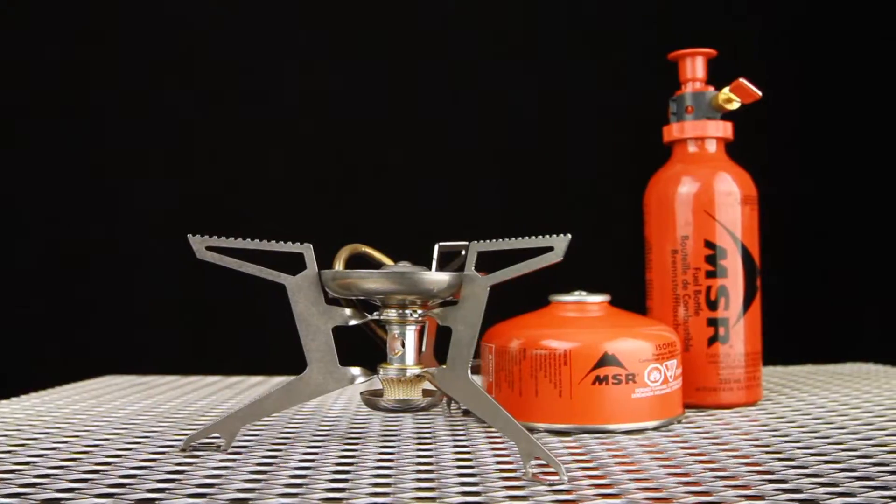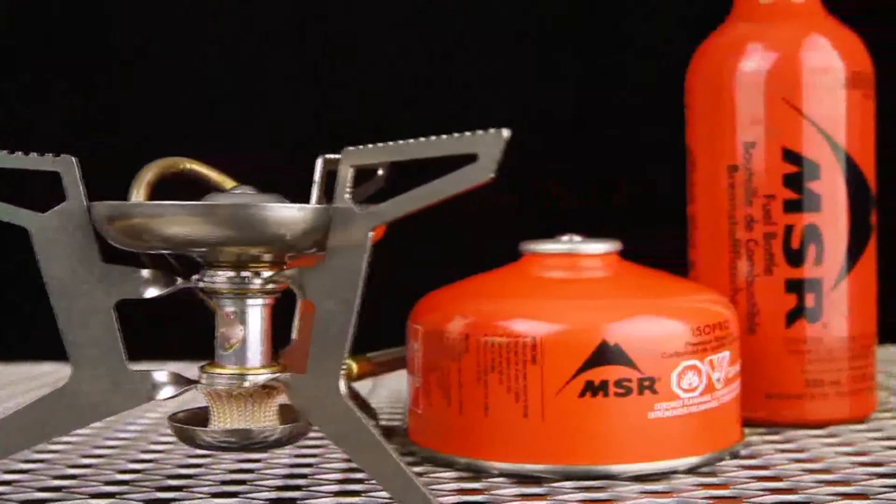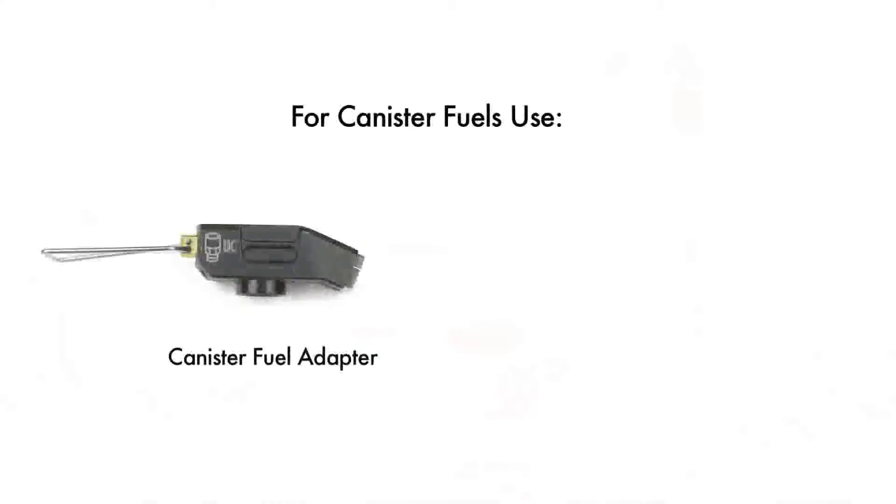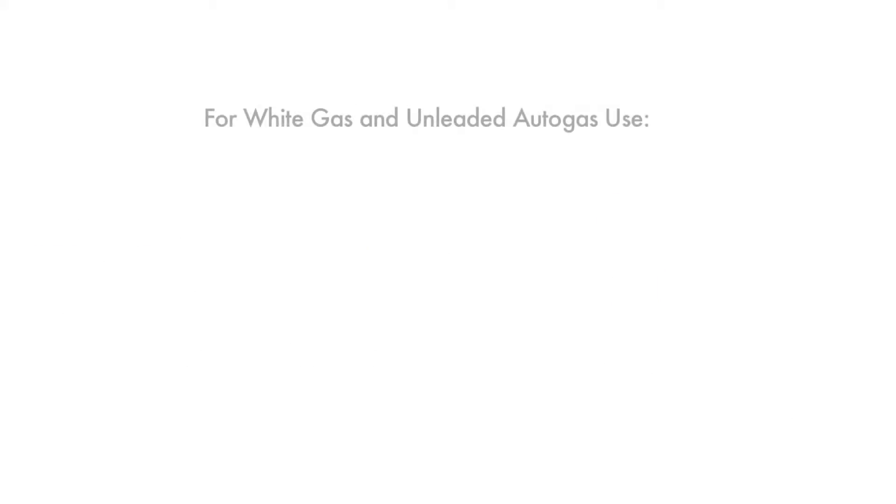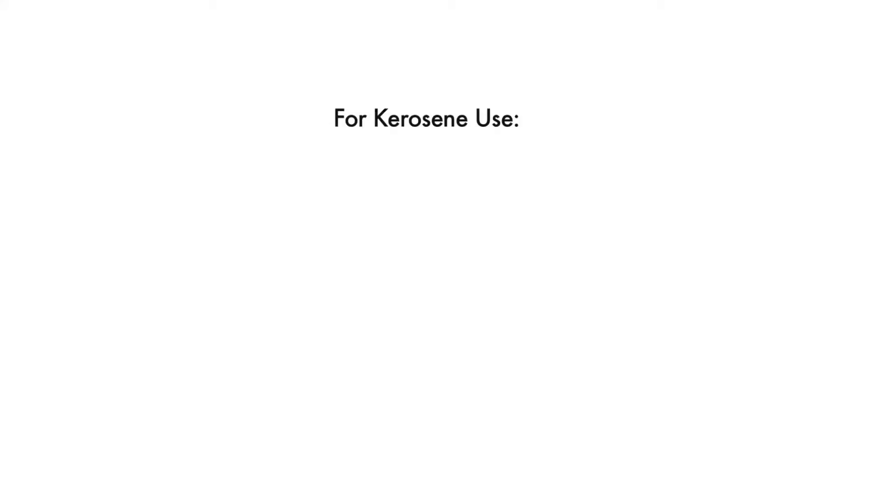There are three different fuel configurations for the WhisperLite Universal, each requiring a different combination of fuel adapter and fuel jet. For canister fuels, use the canister fuel adapter and UC jet. For white gas and unleaded autogas, use the liquid fuel adapter and UG jet. For kerosene, use the liquid fuel adapter and UK jet.